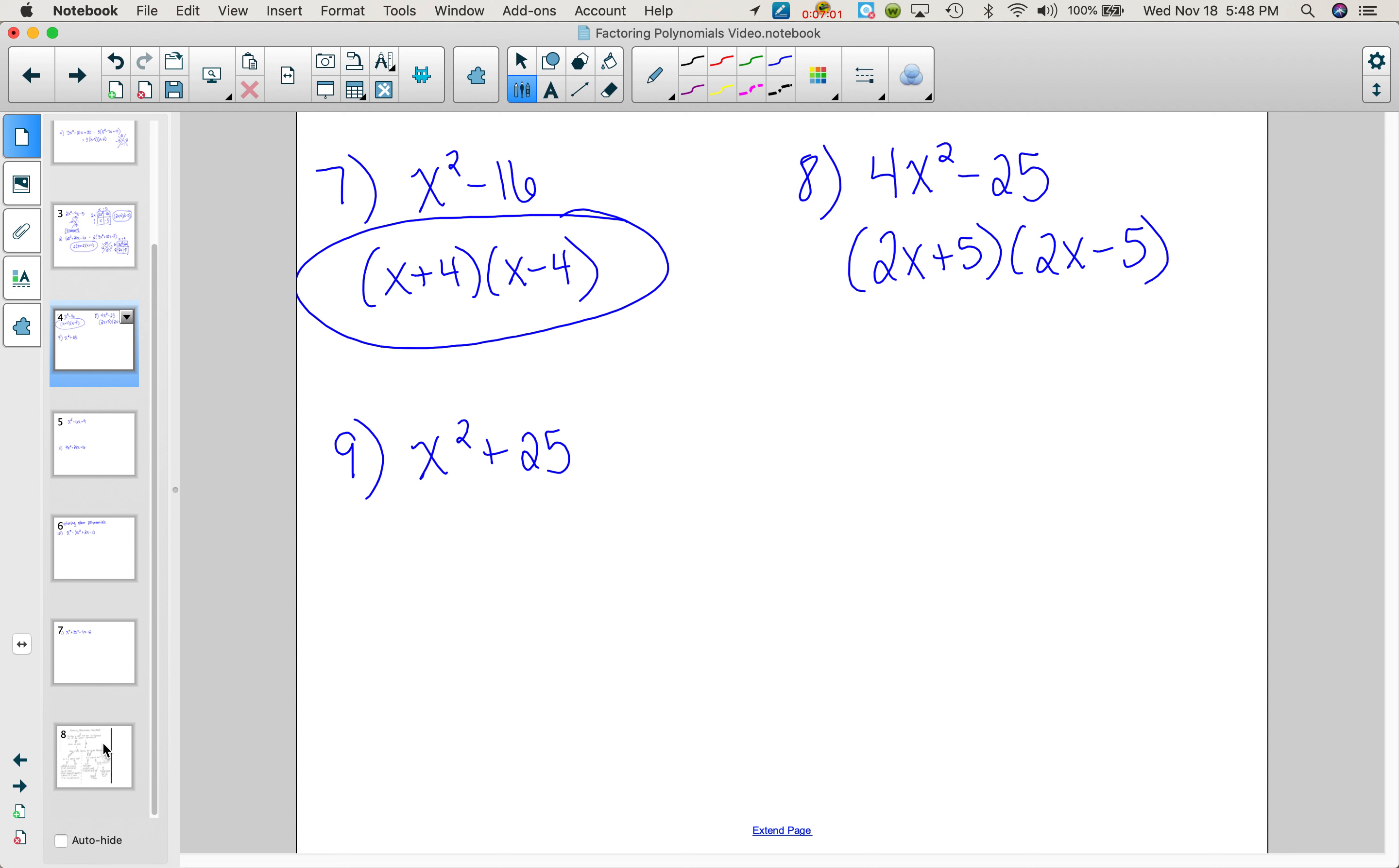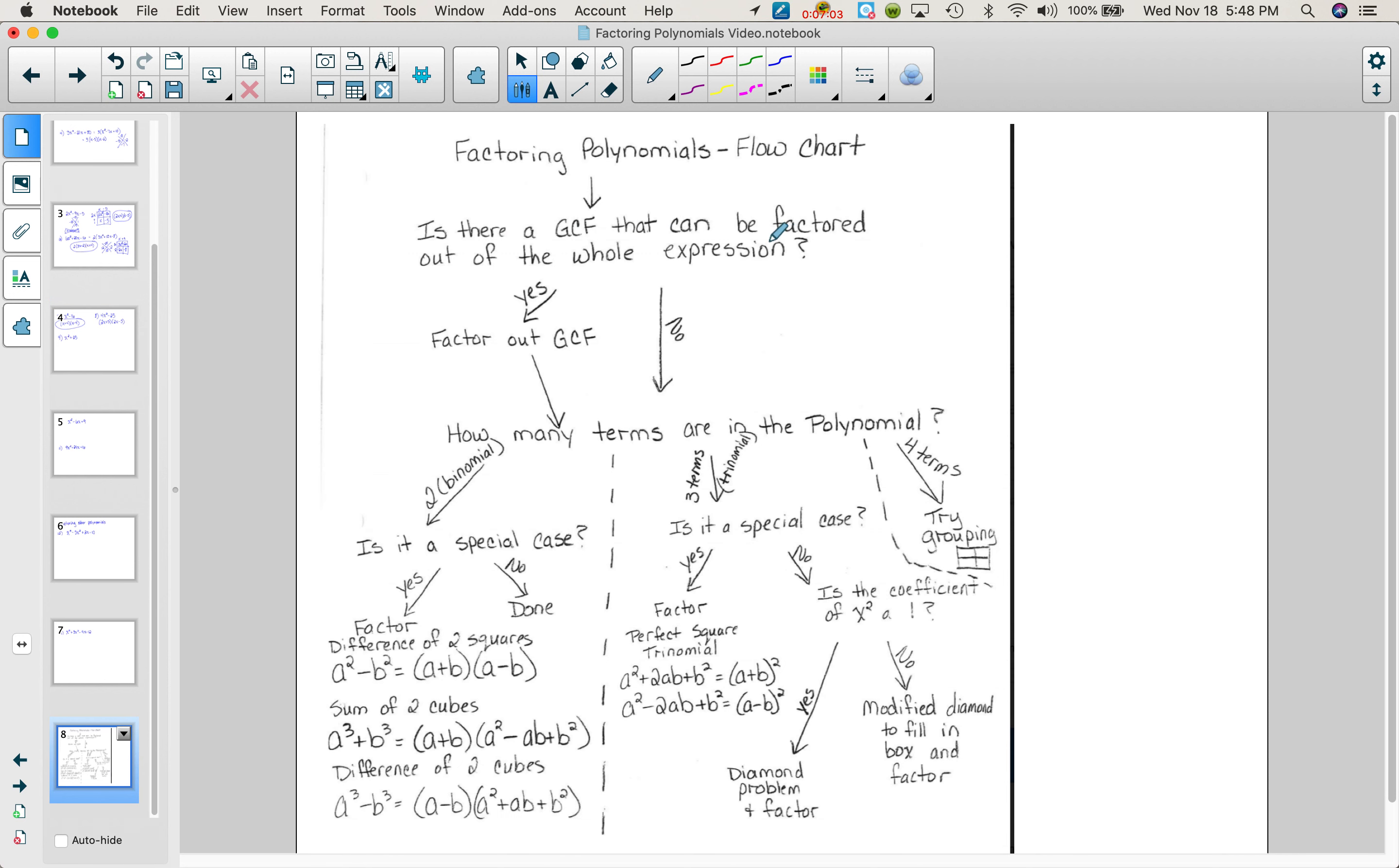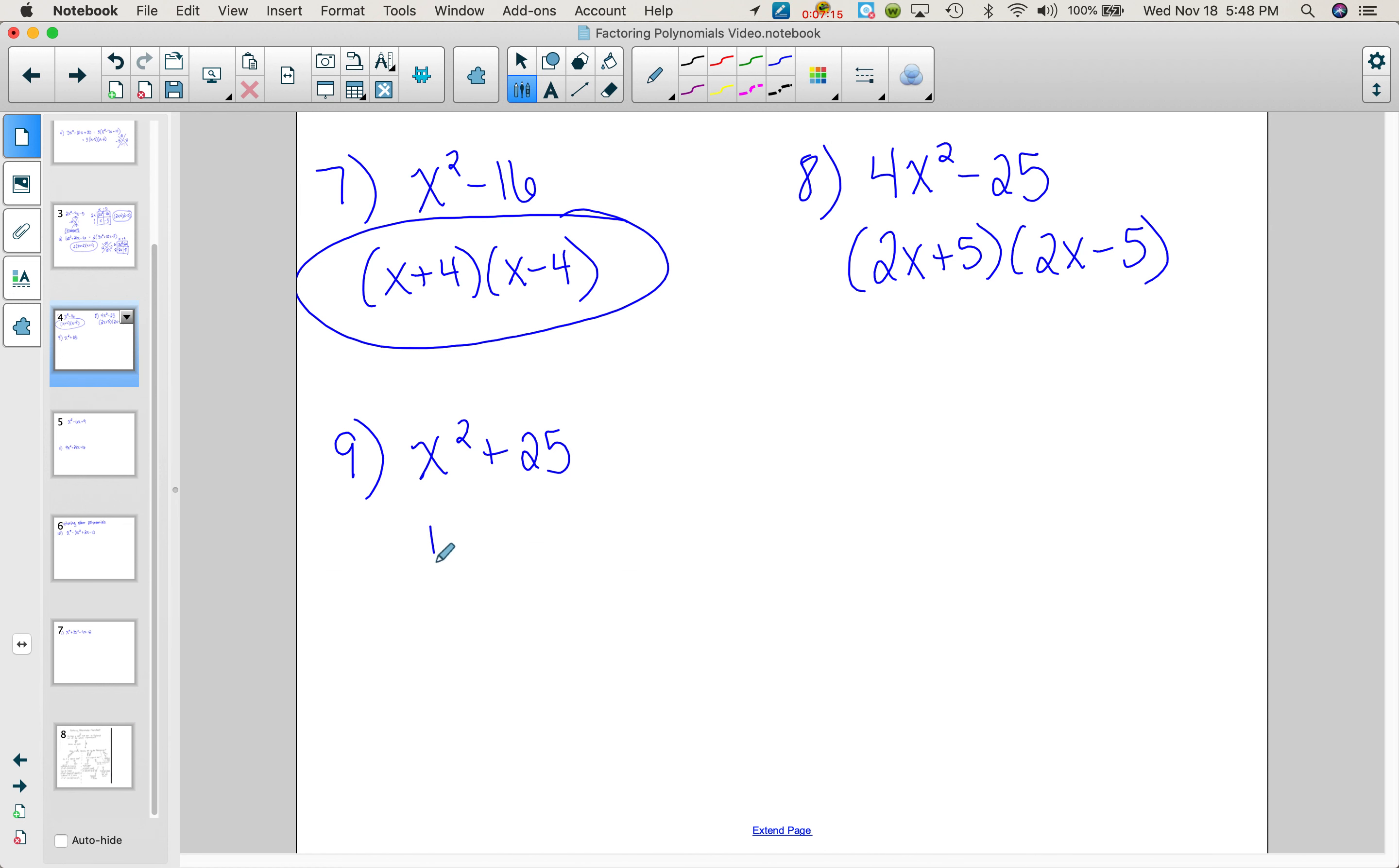Next problem. x squared plus 25. Let's look through here. There's no GCF. There are two terms. Is it a special case? Well, it's two squares, but it's not the difference. That means since it's not a special case, we're done. It can't be factored. So we're going to say prime. You can call it prime if it can't be factored, or you can say not factorable. So there is no formula for the sum of two squares.